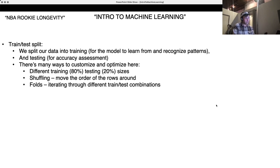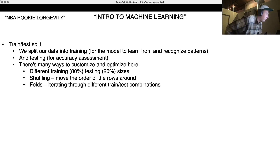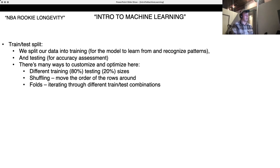Once we've preprocessed and added any new features, we need to split the data into training and testing. Usually the general split is 80-20: we train on 80%, using advanced statistical machine learning methods to find patterns, and then test on that last 20% to see how accurate it is. You can change the split — 50-50, 70-30, something like that. There are also methods like shuffling, where you move the order of the rows around. You can do different kinds of folds, iterating through different train/test combinations.